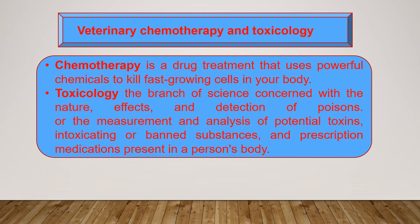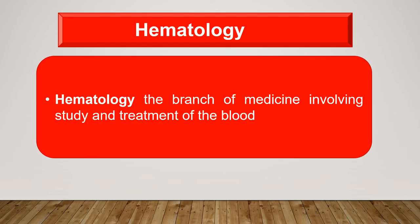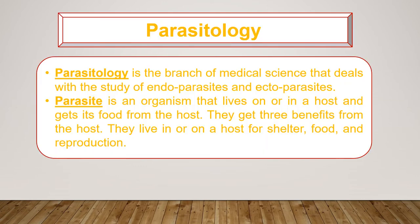Chemotherapy is a drug treatment that uses powerful chemicals to kill fast-growing cells in your body, like cancer cells. Toxicology is that branch of science concerned with the nature, effects, and detection of poisons, or the measurement and analysis of potential toxins, intoxicating substances, and prescription medications present in a person's body. Hematology is that branch of medicine involving the study and treatment of blood.